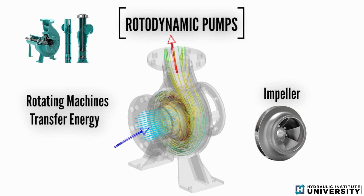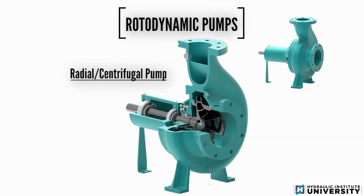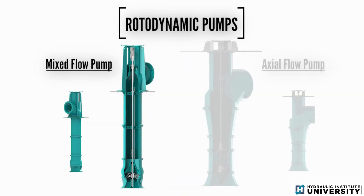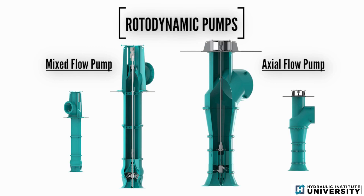Here are some basic images of the three major categories of rotodynamic pumps. First, we have the radial or centrifugal pump, which is the most manufactured and used rotodynamic pump type. Next are the mixed flow and the axial flow propeller style pumps, which are typically used for applications requiring the movement of larger quantities of water.